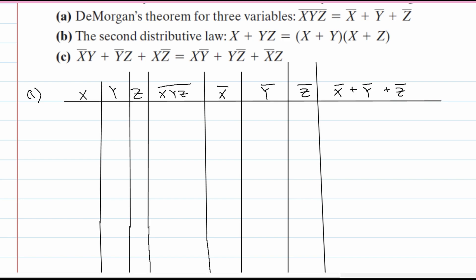We want to fill in all the possible combinations for x, y, and z. There are eight different combinations. The first thing I like to do is write all zeros, then start from the right side and add a one: zero, zero — then zero, one, zero — then one, zero, zero. So that's pretty easy to remember.